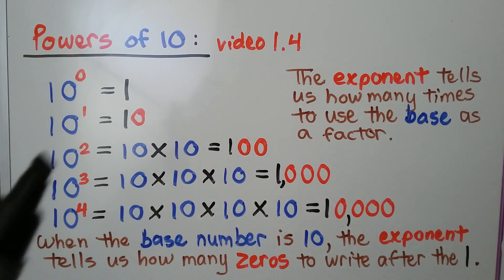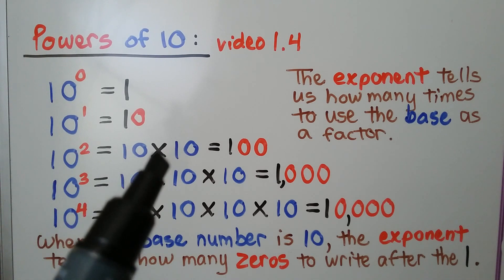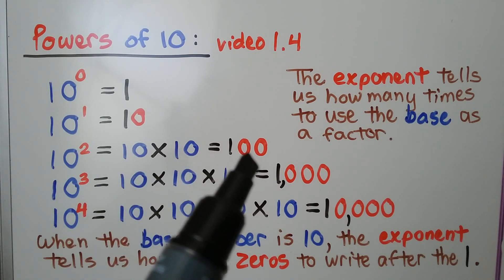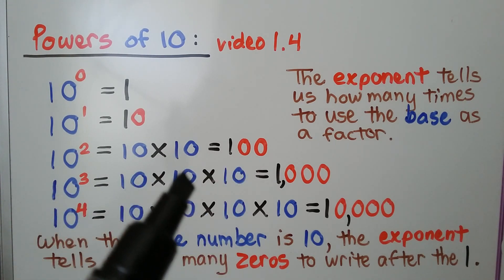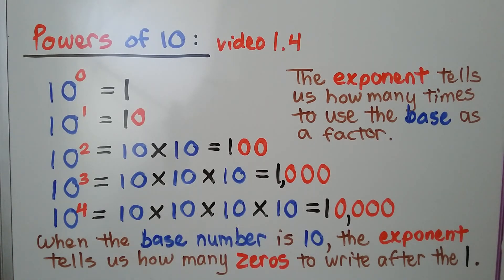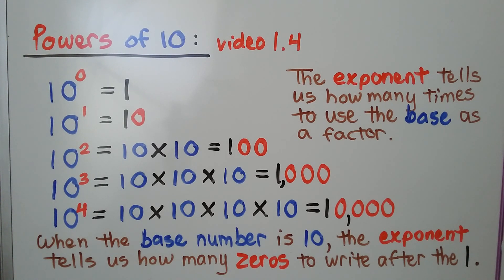10 to the second power, or the second power of 10, means 10 times 10 — it's equal to 100. 10 to the third power means we have three factors of 10; that's 1,000. And 10 to the fourth power means we have four factors of 10; that's equal to 10,000. When the base number is 10, the exponent tells us how many zeros to write after the one.